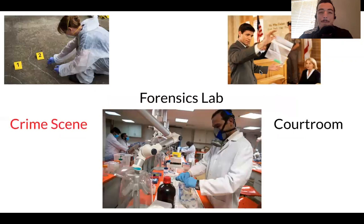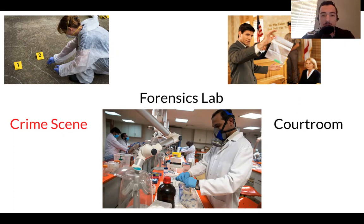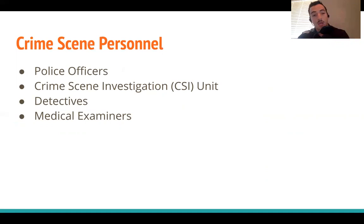Last week we kind of just covered the basic crime scene. We talked about the different types of crime scenes — the three different types — and we talked a little bit about the personnel of a crime scene. So we're going to review this a little bit today, as it ties into what we cover. Crime scene personnel are the people that show up to the crime scene: first your police officers, then your CSI unit, then detectives, and then medical examiners.